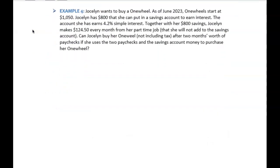Example 4. Jocelyn wants to purchase a one wheel. As of June 2023, one wheels start at $1,050. Jocelyn has $800 she can put in a savings account. Together with that savings, Jocelyn makes $124.50 every month. Can she buy her one wheel after two months worth of paychecks, if she uses those two paychecks and the savings account money?